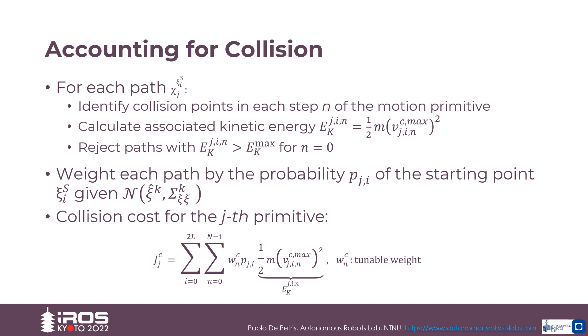Finally, the collision cost of the j-th primitive takes the form of the equation reported in the slide. In this equation, W_n^c is a tunable positive weight for each step, and the earlier steps of the motion primitive carry more weight with respect to a possible collision.